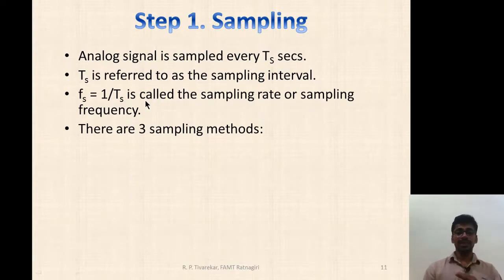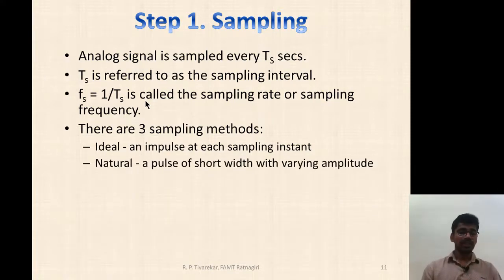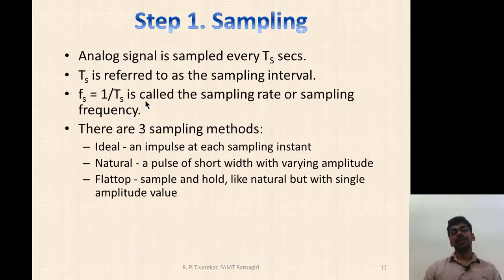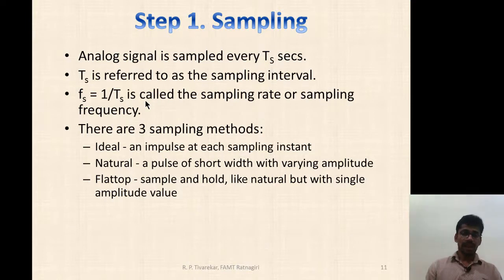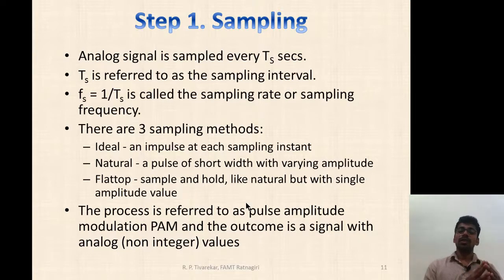There are three different sampling methods available. First is ideal sampling, where an impulse is used for instantaneous sampling. Second is natural sampling, where a short-width pulse is used whose amplitude is dependent on the amplitude of the analog signal being sampled. Third is flat-top sampling, where again a short-width pulse is used, but its amplitude does not vary with the analog signal — it is flat. These three techniques are generally called Pulse Amplitude Modulation, and the outcome is a signal with analog non-integer values.